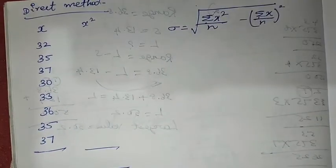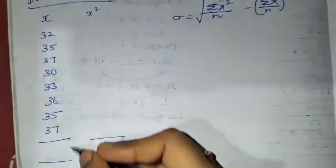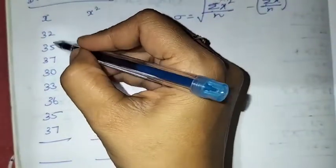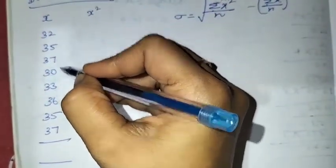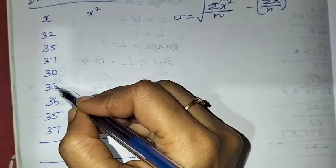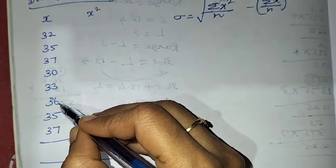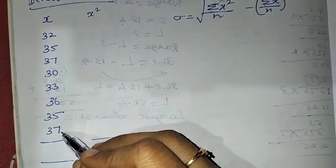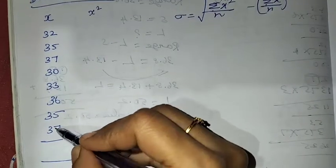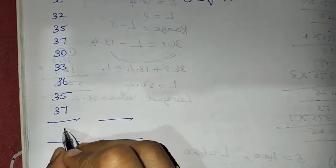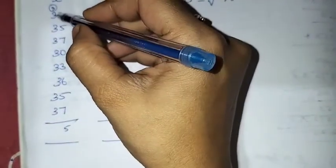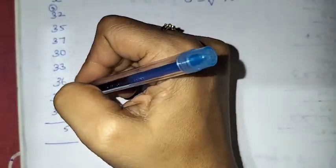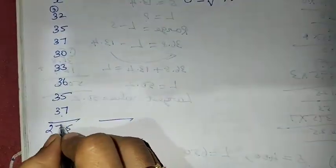First, we add the x values. 2 plus 5 is 7, 7 plus 7 is 14, 14 plus 3 is 17, 17 plus 6 is 23, then 28, 35. The summation x is 275.